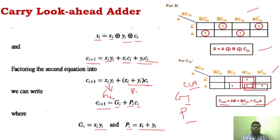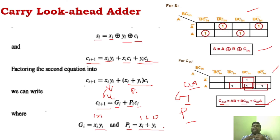For Gi to be 1, both Xi and Yi must be 1, since it is an AND operation. For Pi to be 1, either Xi or Yi has to be 1. The generate function generates the carry, and the propagate function propagates the carry. This expression forms the logic for generating the carry in a carry look-ahead adder.